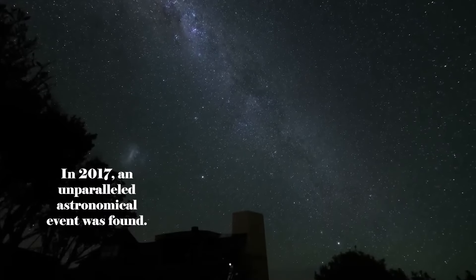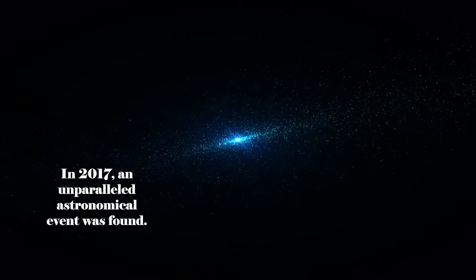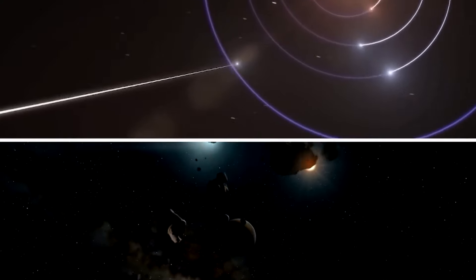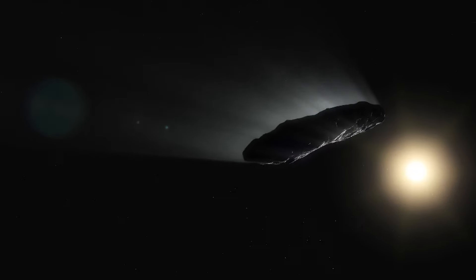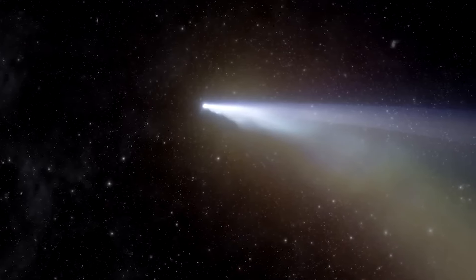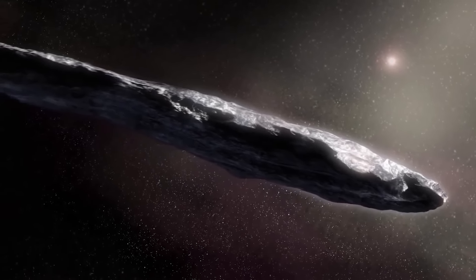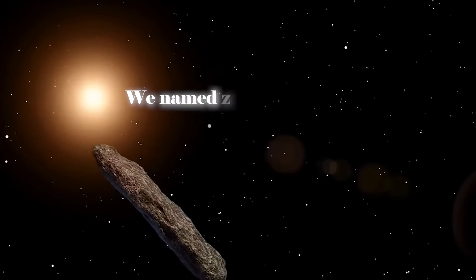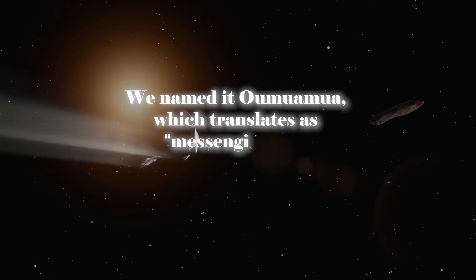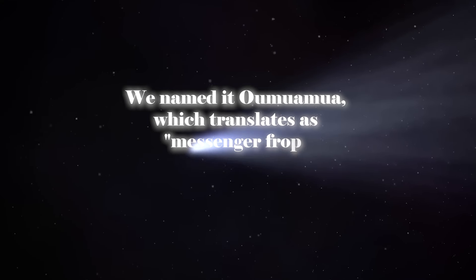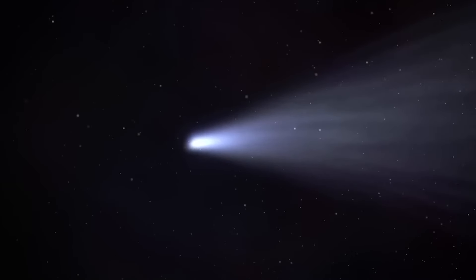In 2017, an unparalleled astronomical event was found. We detected an object that, as we believe, had its origin beyond our own solar system. Its provenance became a matter of controversy. Was it a comet despite its singular orbit? Or was it an asteroid given that it lacked a discernible tail? Or perhaps it was something completely unusual? A traveler from another galaxy, and the first of its kind? We named it Oumuamua, which translates as messenger from the distant past. And this discovery became a magnificent achievement that gave us a glimpse into the objects present in space.